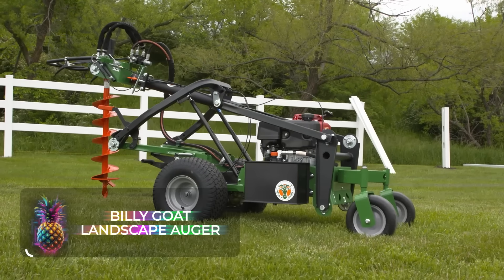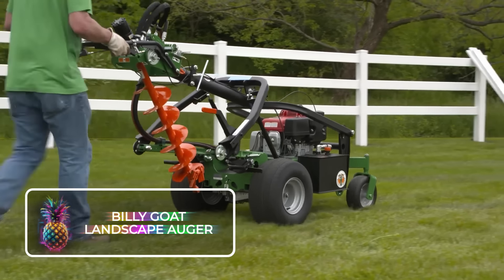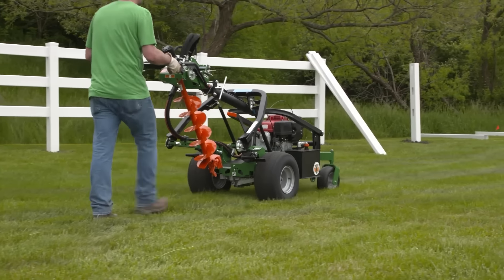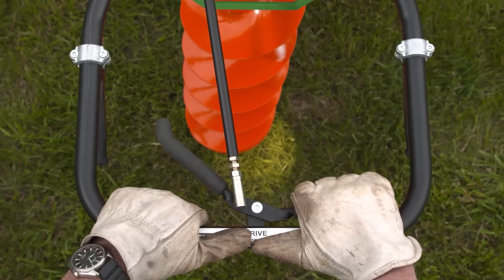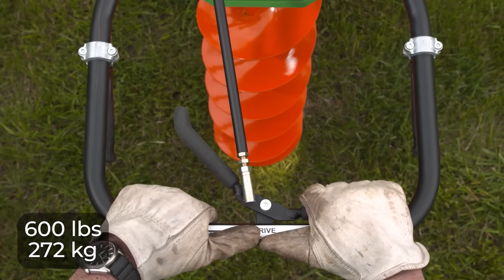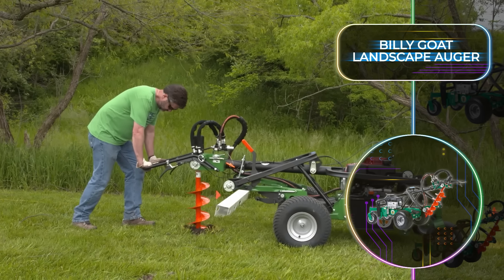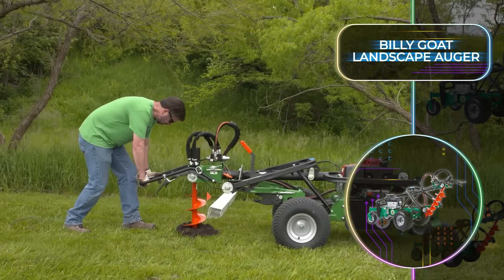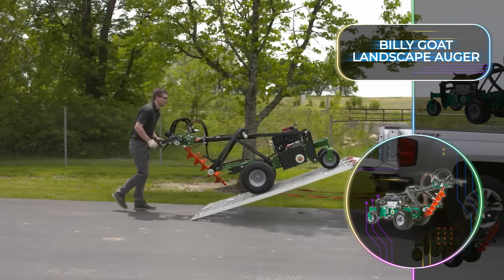Billy Goat Landscape Auger. Next up we have the Billy Goat Landscape Auger, an amazingly versatile system designed to help you with a wide variety of outdoor projects including fence and deck building, sign installation, and more. Weighing in at 600 pounds or 272 kilograms, this model is surprisingly maneuverable thanks to the addition of wheels of different sizes, 11 and 18 inches or 28 and 46 centimeters.